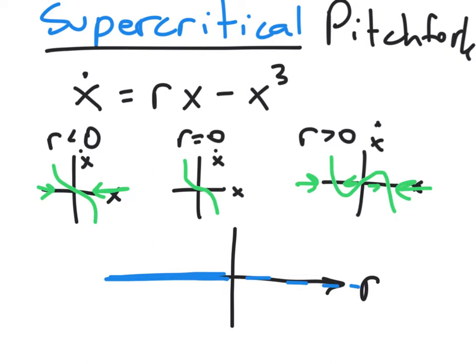That's a dashed line, indicating instability. In addition, these two new fixed points have been born symmetrically, and they're both stable.